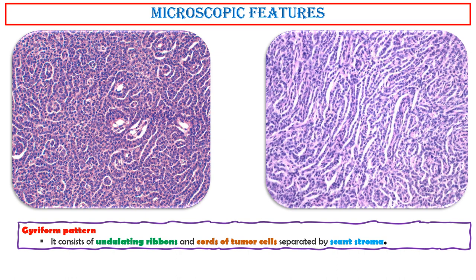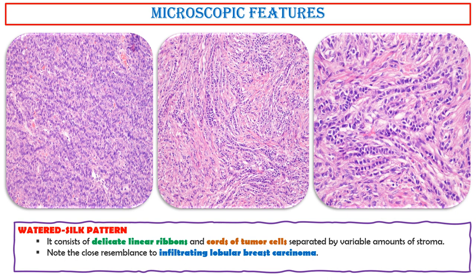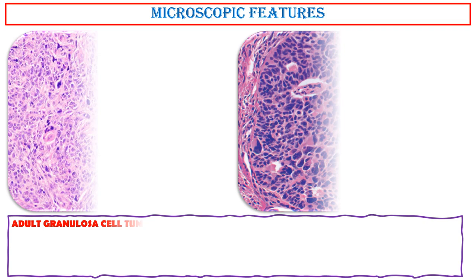Gyriform pattern. It consists of undulating ribbons and cords of tumor cells separated by scant stroma. Watered silk pattern. It consists of delicate linear ribbons and cords of tumor cells separated by variable amounts of stroma. Note the close resemblance to infiltrating lobular breast carcinoma; in cases like this, metastatic lobular breast carcinoma should be excluded.